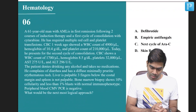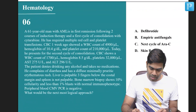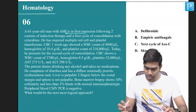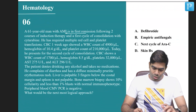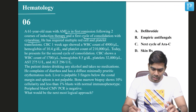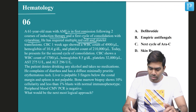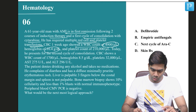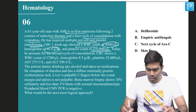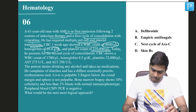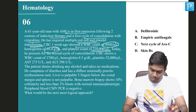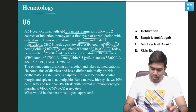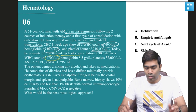Question number six: a 16-year-old man with AML in first remission following two courses of induction therapy and the first cycle of consolidation with cytarabine. He has required multiple red cell and platelet transfusions. CBC one week ago showed WBC count of 4,900, hemoglobin 10.4, platelet of 210,000. Today he presents with pancytopenia just before the second cycle of consolidation chemotherapy, with WBC only 1,700.